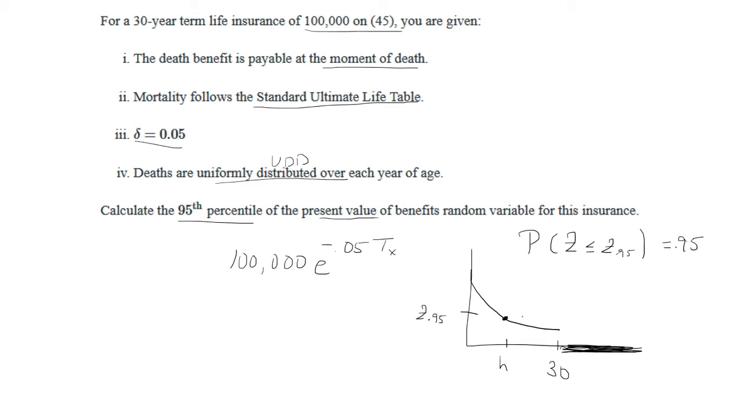So basically we want it to be, well these are, think of this as like the y-axis on our graph. So the x-axis is the time until death. And then the y-axis is the present value. So we're looking for when z is less than or equal to z of 0.95. So that's all the y-values that are below it, which happens to be over here.